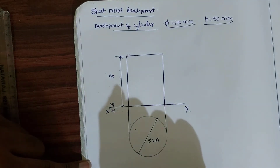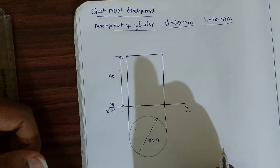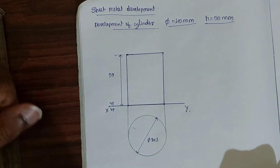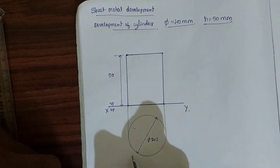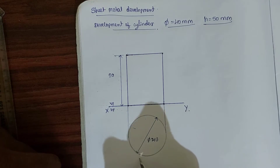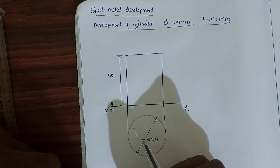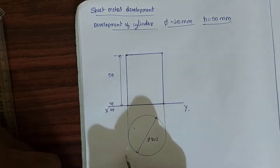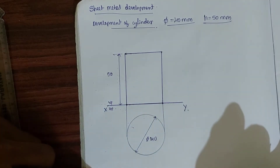Now we need to do the development of the cylinder. Before doing the development, we need to calculate the linear length of the sheet required to manufacture a cylinder with 40mm diameter. This circular arc length must be converted into a linear distance.